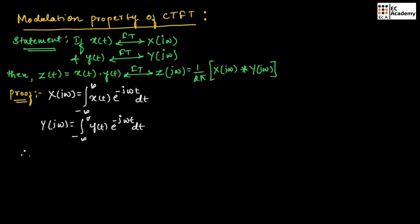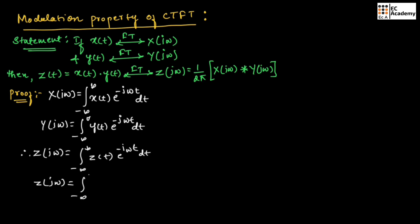Therefore, we can write Z(jω) is equal to integration of minus infinity to infinity X(t) into Y(t) exponential to the power of minus jωt dt. In place of Z(t), let us substitute X(t) into Y(t). Let us call this equation number 1.